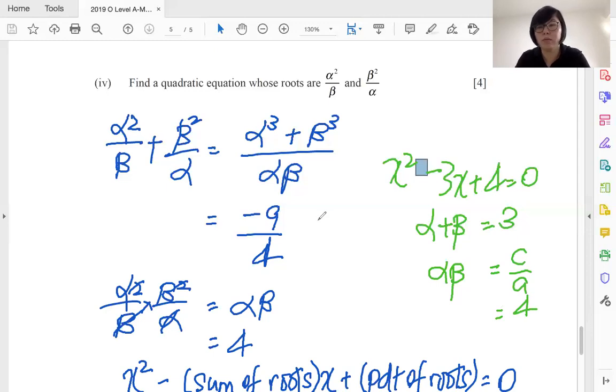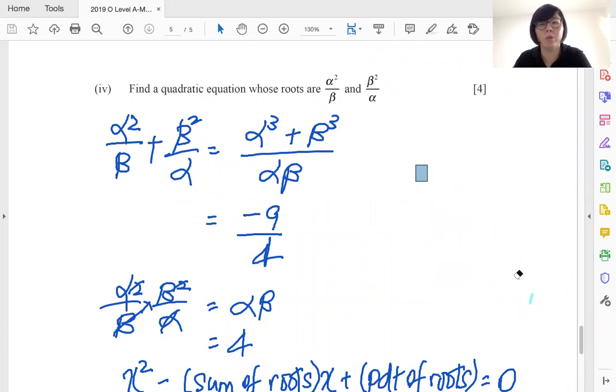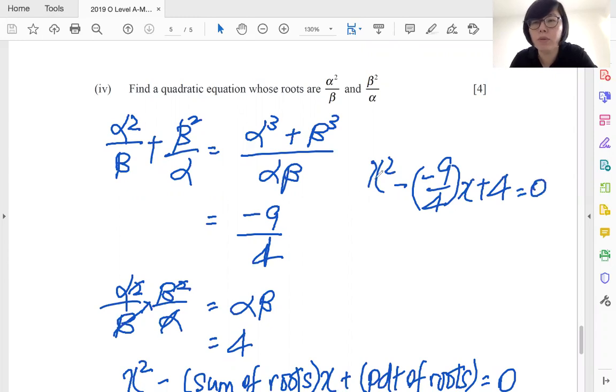All right. Okay, run out of space. Let me see what I can do. All right, so let me just write it somewhere here. Let me just clear off this green color portion here. Okay, then I'm going to continue my working there. All right, all right, so x square minus sum, which is negative nine over four x, plus product, which is four, equals to zero.